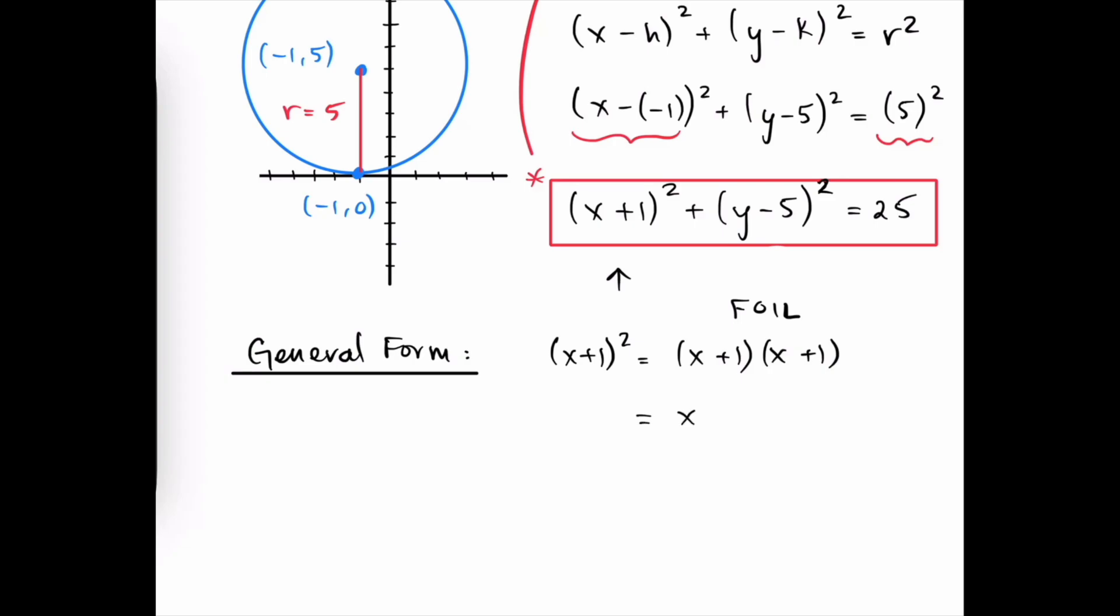Which is multiply the first two terms together to get x squared. The outer terms, x times 1 is just x. The inner terms, x times 1 is again x. And the last two terms, 1 times 1 is positive 1. This gives us x squared plus 2x plus 1. So that's our first binomial multiplied out.